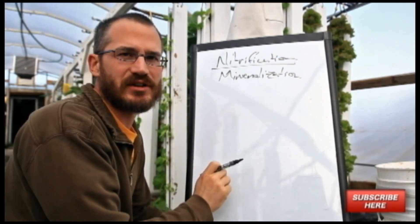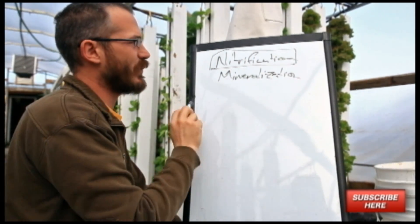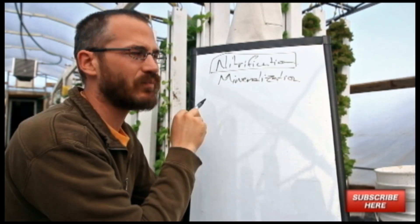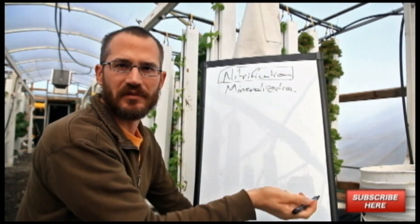Today we're going to talk about nitrification. This is basically a microbial process by which ammonia is converted into nitrate and the nitrogen in the system is made more available to the plants.